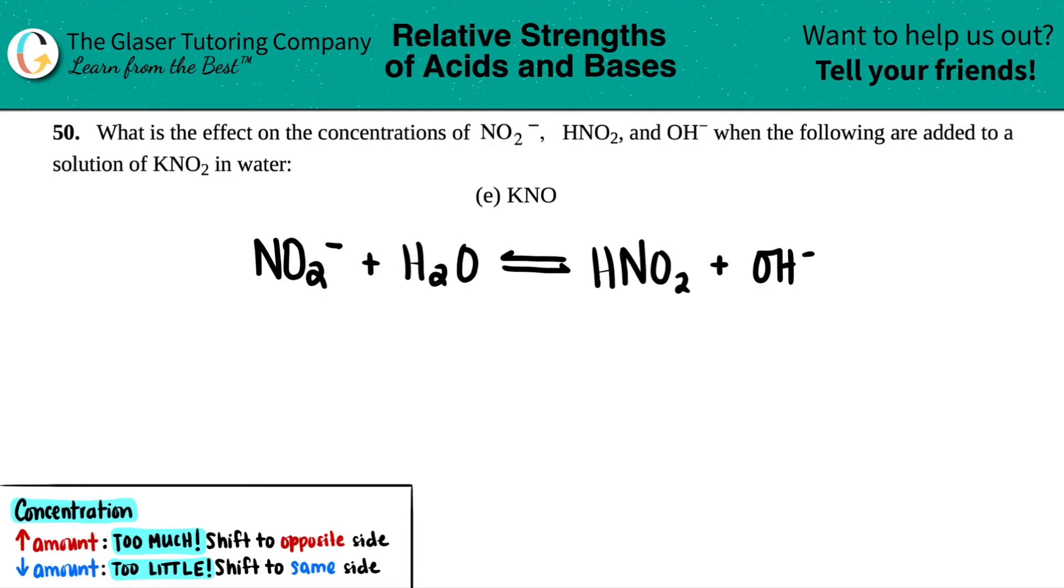Number 50. What is the effect on the concentrations of NO2 minus, HNO2, and OH minus when the following are added to a solution of KNO2 in water?